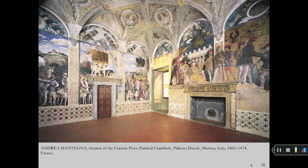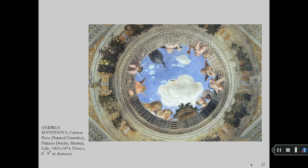Wealthy patrons commissioned elaborate fresco interiors, such as this painted chamber in the Duke's Palace in Mantua. André Mantegna is the artist of this frescoed ceiling, also in the Duke's Palace. The perspective technique is called di sotto in sù, meaning from below upward. He integrated both real and painted architectural elements. The cherubs are copied most often today.